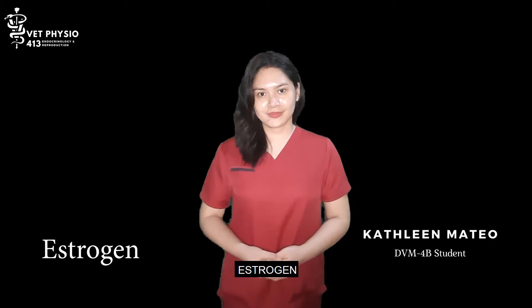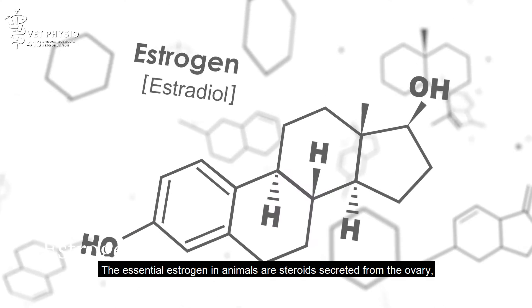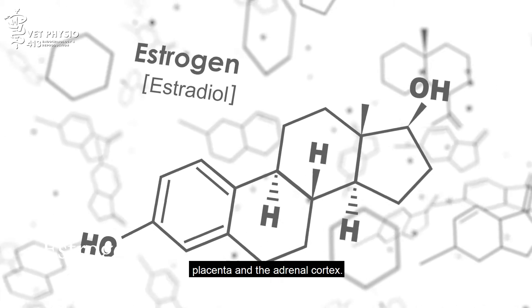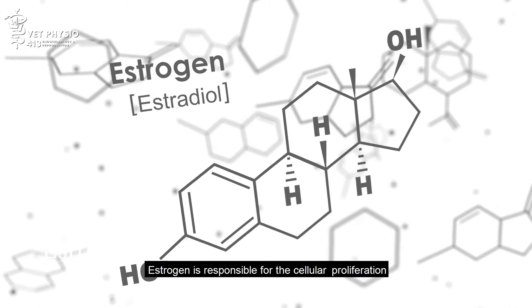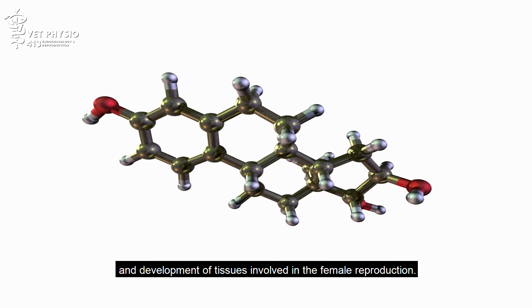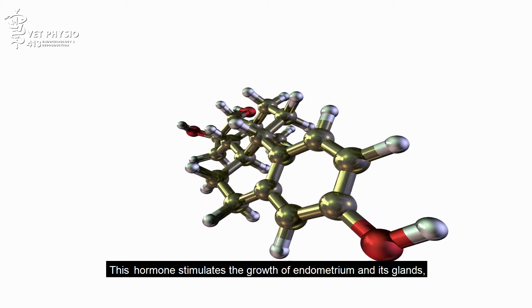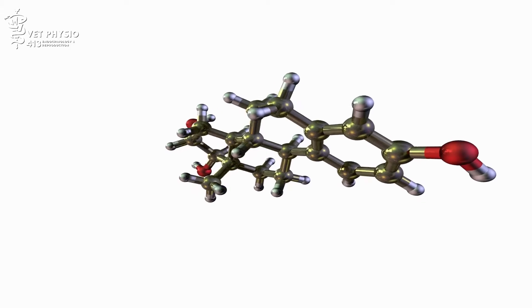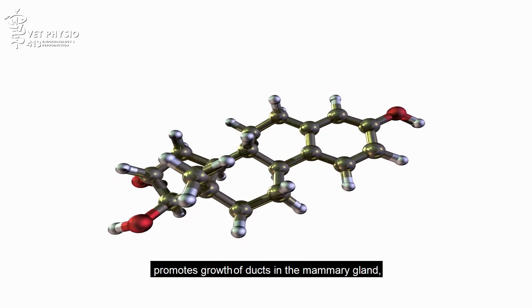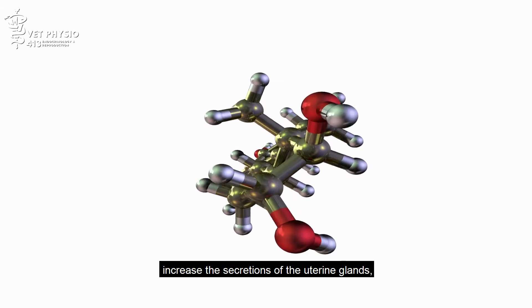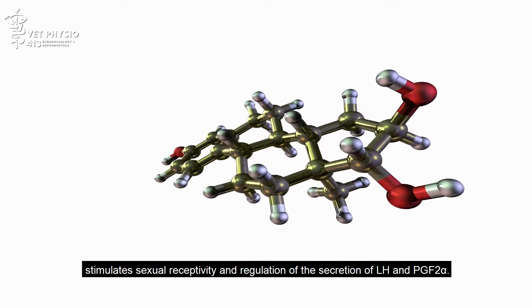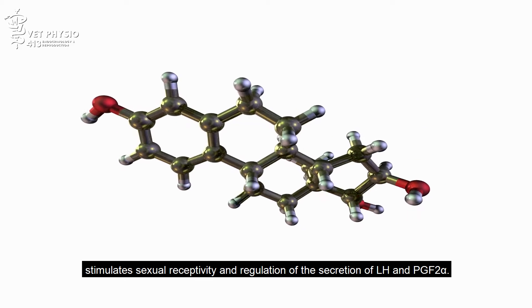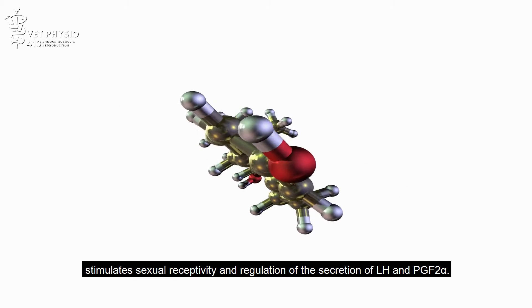Estrogen. The essential estrogens in animals are steroids secreted from the ovary, placenta, and the adrenal cortex. Estrogen is responsible for cellular proliferation and development of tissues involved in female reproduction. This hormone stimulates the growth of the endometrium and its glands, promotes growth of ducts in the mammary gland, increases the secretions of the uterine glands, and stimulates sexual receptivity and regulation of the secretion of luteinizing hormone and prostaglandin F2-alpha.